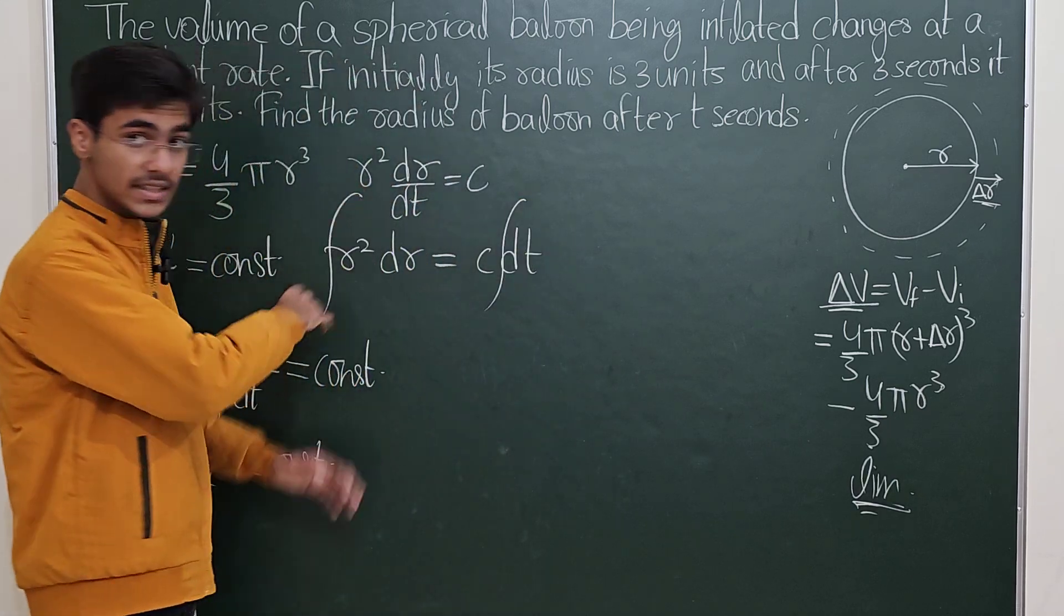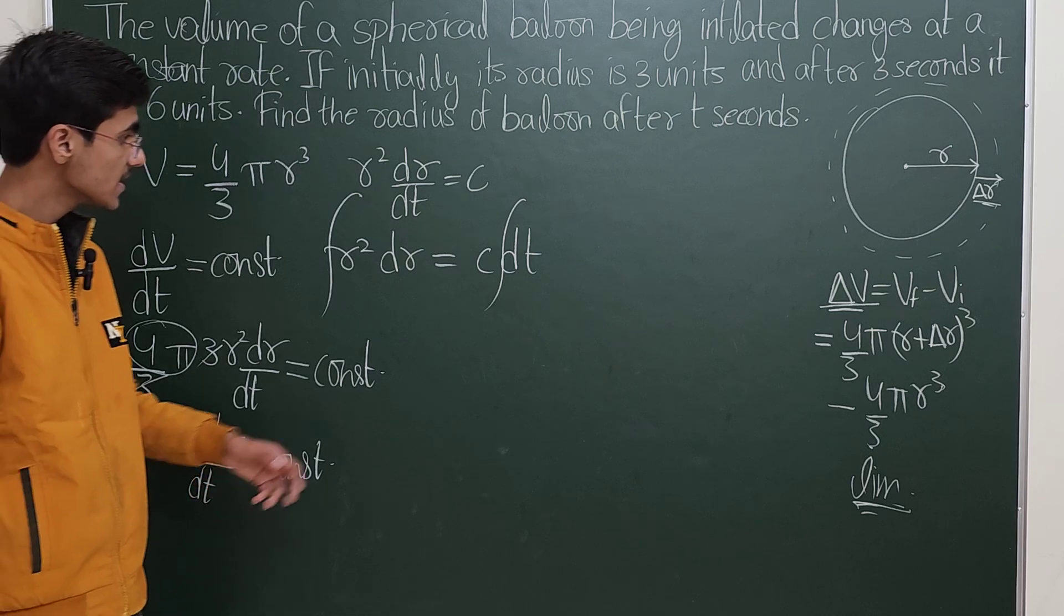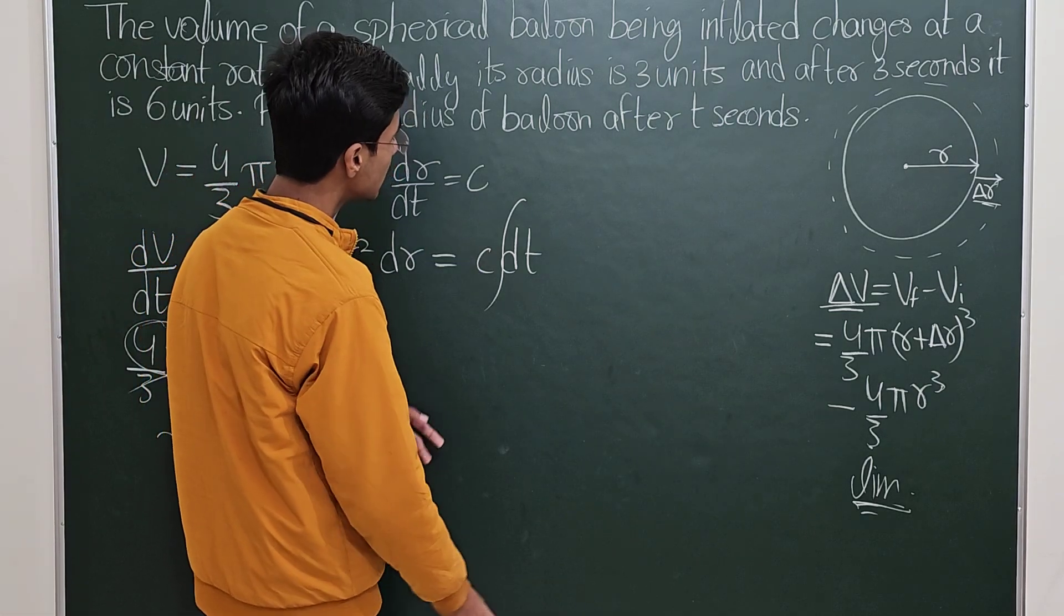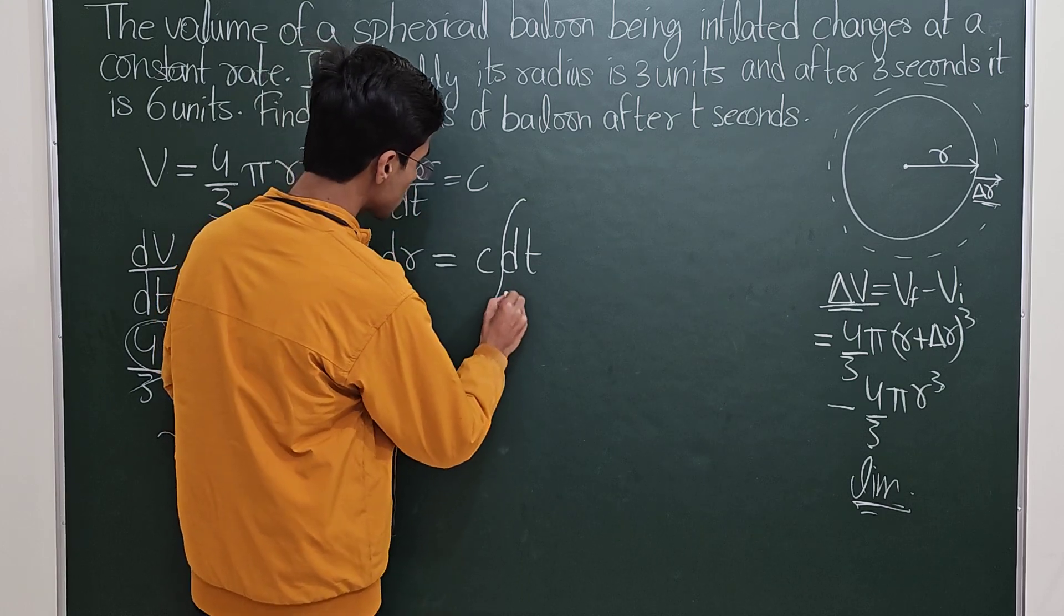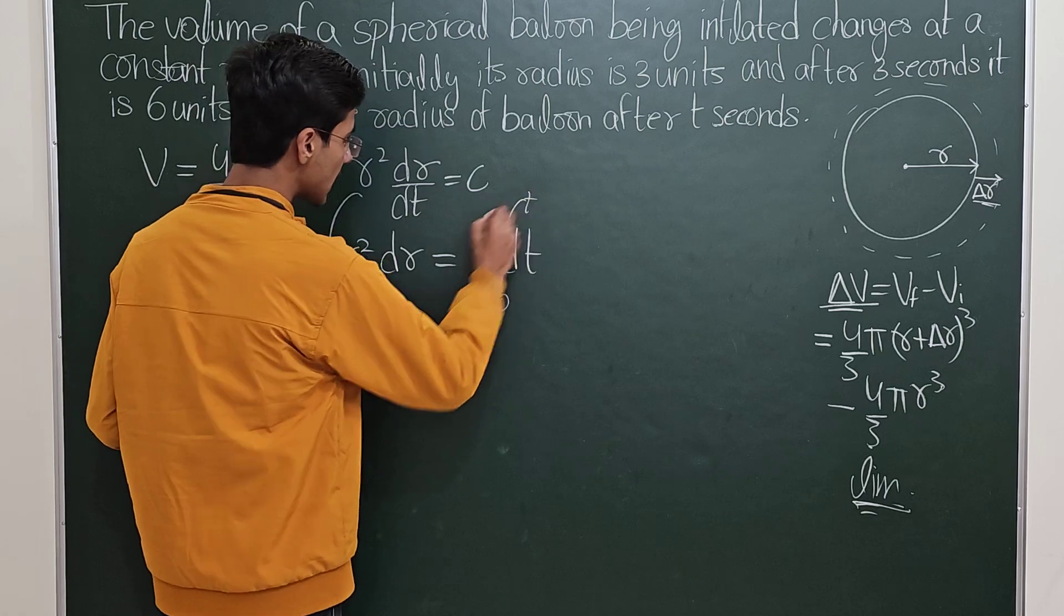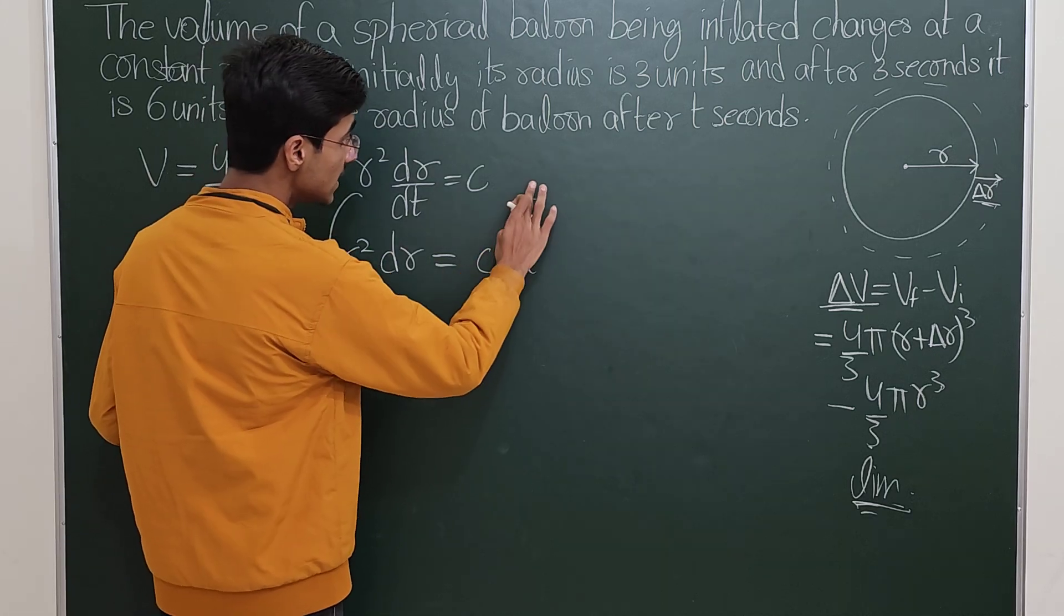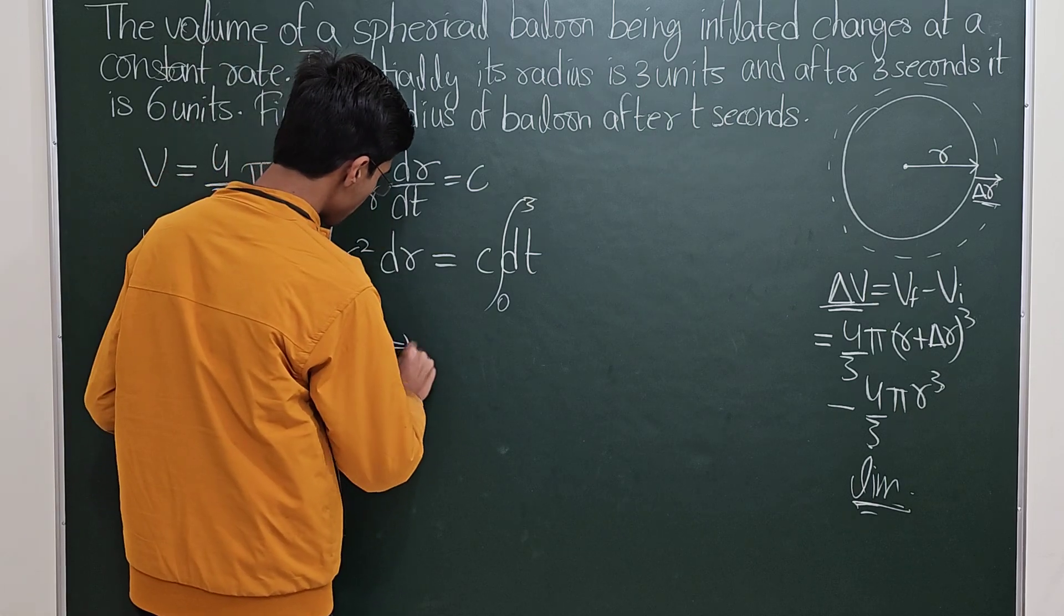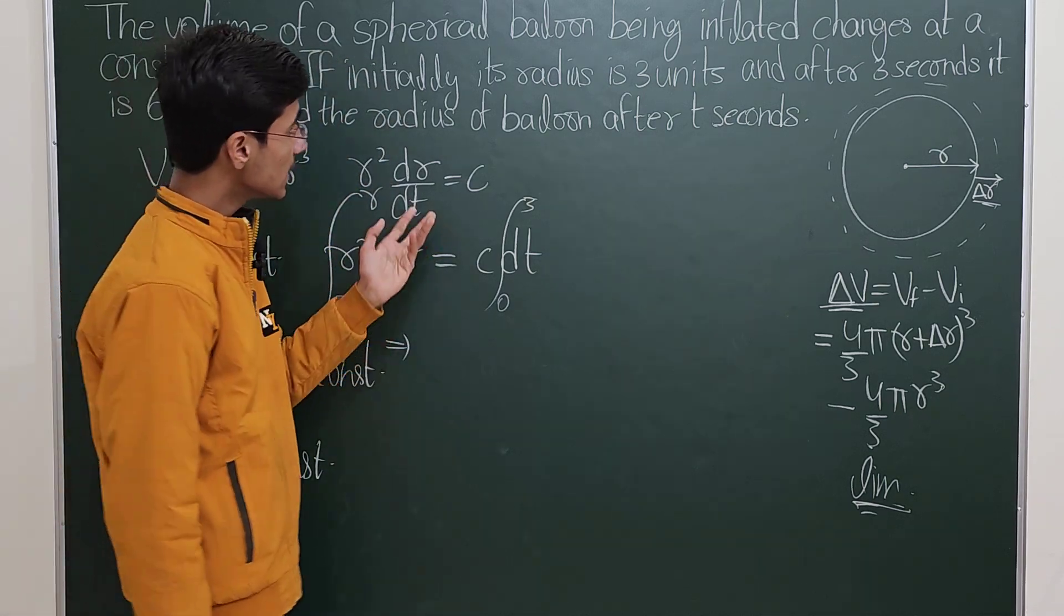If this constant is c, you now say that r² dr should equal c dt. Since it is a constant, I'm integrating both sides of the equation and taking this thing out of the integral sign because it's a constant. Initial radius, at time t=0 is 3 units. At some time 3 seconds, it is r units. In fact, its value is also given, it is told that it is 6 units.